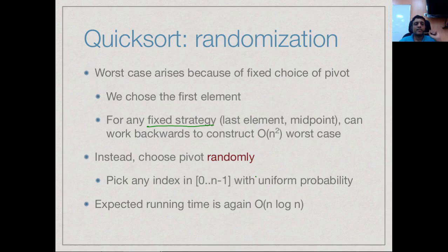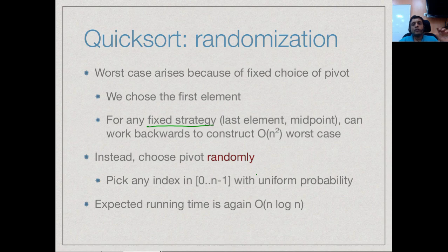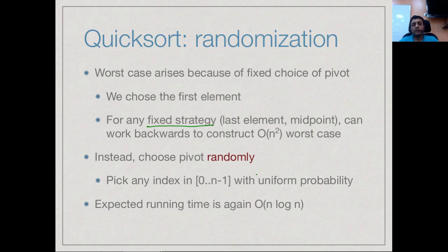So the solution is to not fix the strategy. Each time I want to apply quicksort to a recursive subproblem, I have some position 0 to n minus 1 which I need to pick as the pivot. But rather than telling you that it is going to be 0 or n minus 1 or the midway between 0 and n minus 1, I will say that I will choose any one of these values with equal probability.